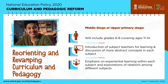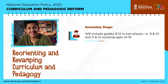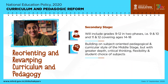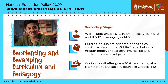The middle stage emphasizes experiential learning within each subject and exploration of relations among different subjects. The secondary stage includes grades 9 to 12 in two phases — grades 9 and 10, and grades 11 and 12 — covering ages 14 to 18, building on the subject-oriented style of the middle stage but with greater depth, critical thinking, flexibility, and student choice of subjects. Students also have the option to exit after grade 10 and re-enter at a later stage to pursue any course in grades 11 to 12.